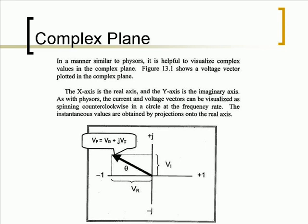The figure below shows a voltage vector plotted in the complex plane. The x-axis is the real axis and the y-axis is the imaginary axis. As with phasors, the current and voltage vectors can be visualized as spinning counterclockwise in a circle at the frequency rate. The instantaneous values are obtained by projections onto the real axis.